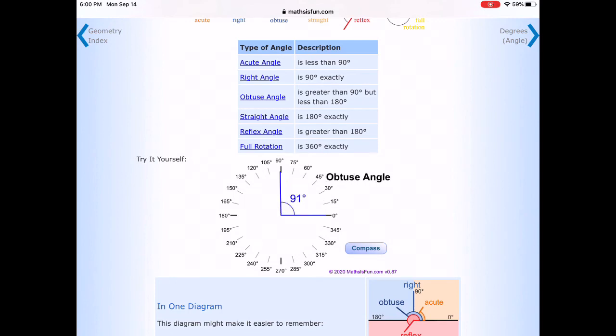All right, how about obtuse angles? Let's try that out. Is 135 greater than 90? It is. And look, obtuse angle is what this ruler is indicating here. Is 165 greater than 90? It sure is.